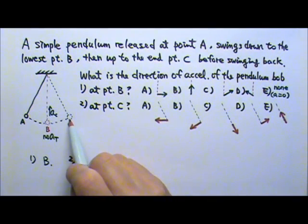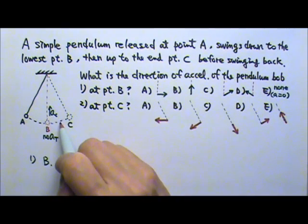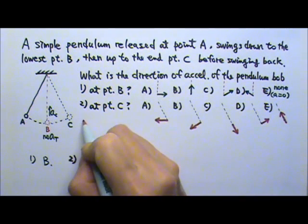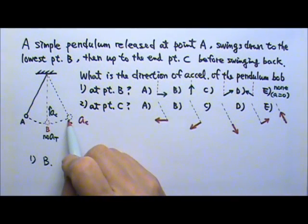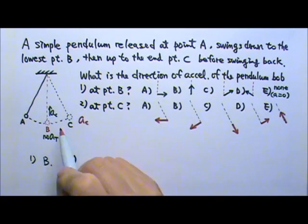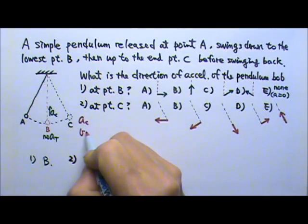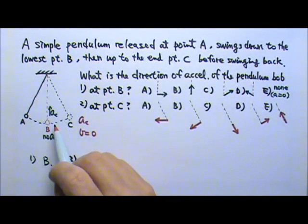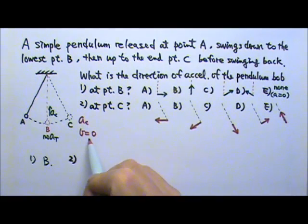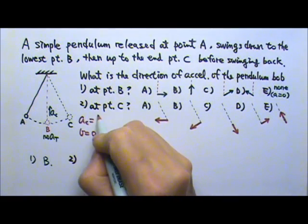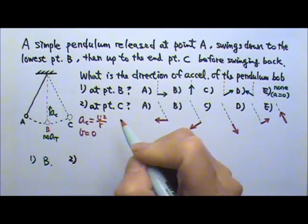At point C, it is on a curve. Does it have centripetal acceleration? At point C, what do you think is the speed? At point C, the speed is zero because it's a turning point. So the speed is zero. And the centripetal acceleration is V squared over R.